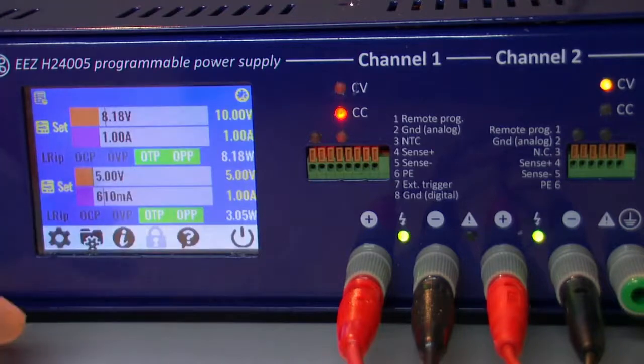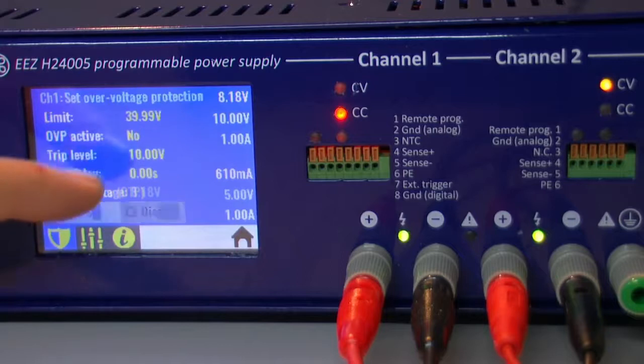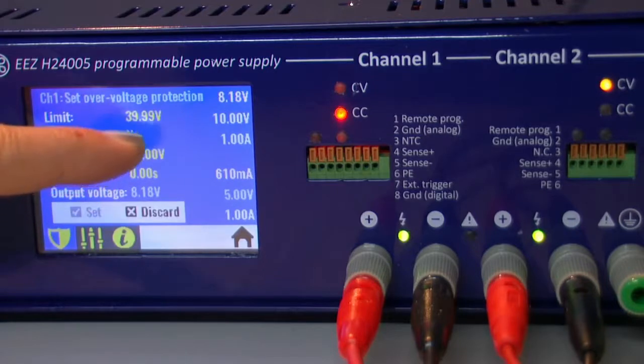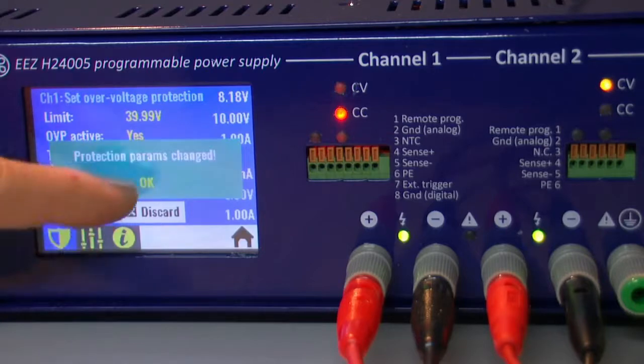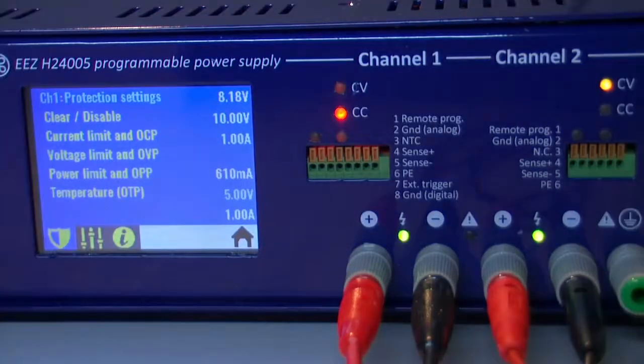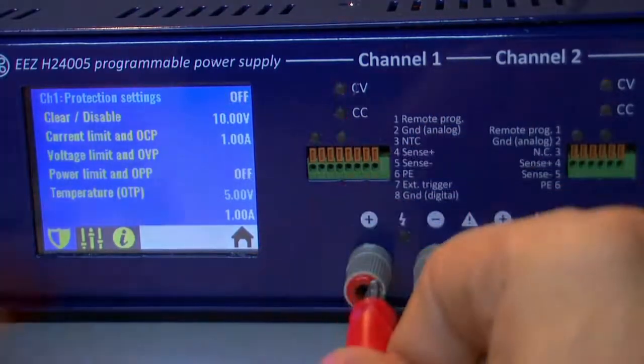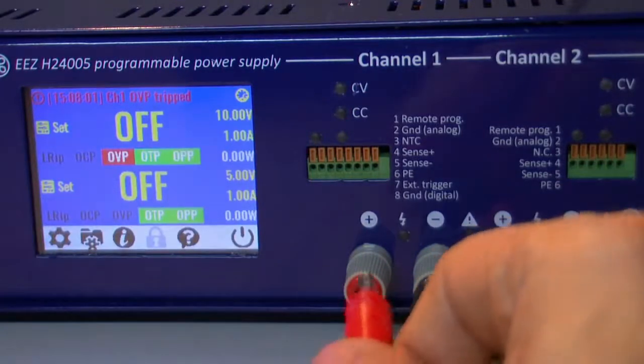Okay. And now we can for instance define over-voltage protection on channel 1. By removing a load we will get off on both channels.